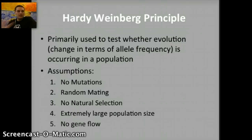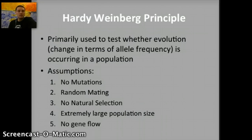If these five conditions are met — no mutations, random mating, no natural selection, large population size, and no gene flow — then that means the population is not changing. Generally, and for the most part, we see at least one of those assumptions occurring in real populations.